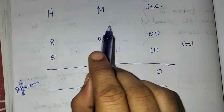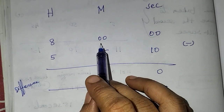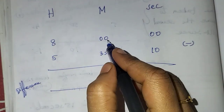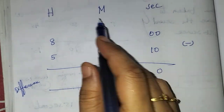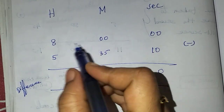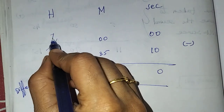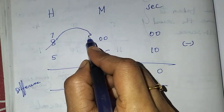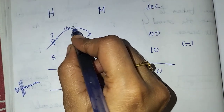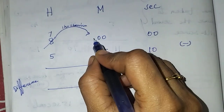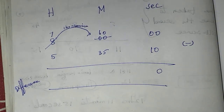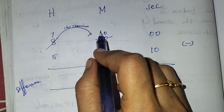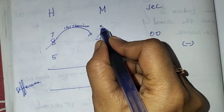We need to borrow a little bit. In the seconds column, we borrow from minutes — 1 minute equals 60 seconds. So we borrow a minute and add 60 seconds. After borrowing, the minutes column becomes 59 minutes.